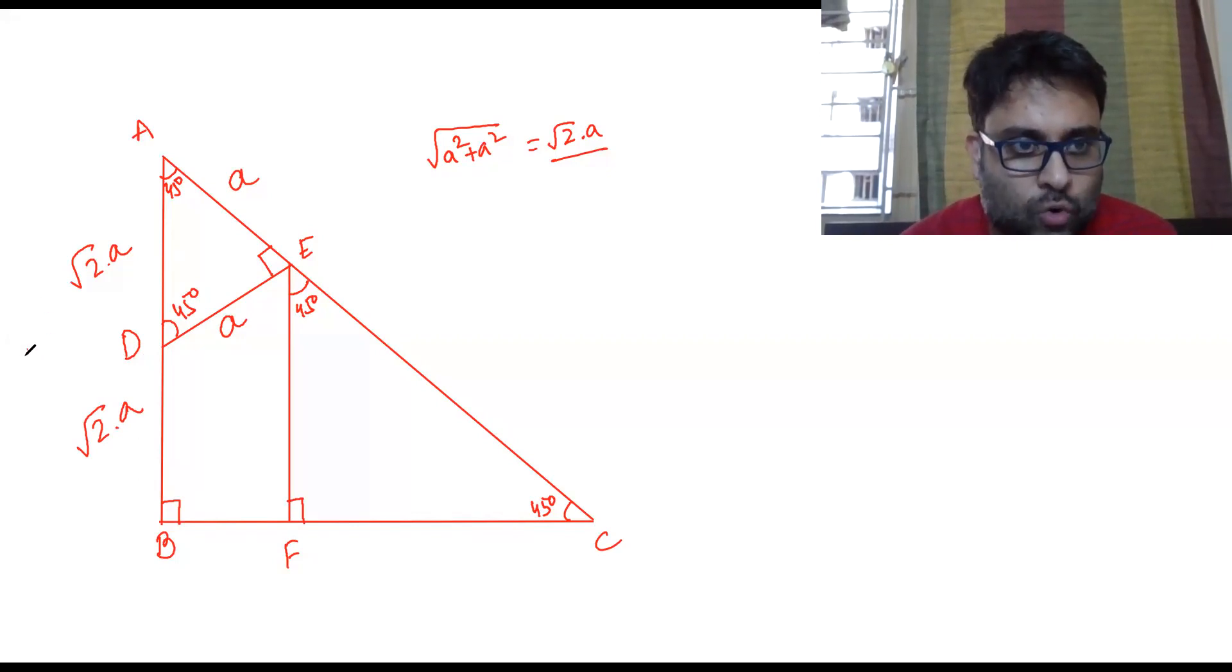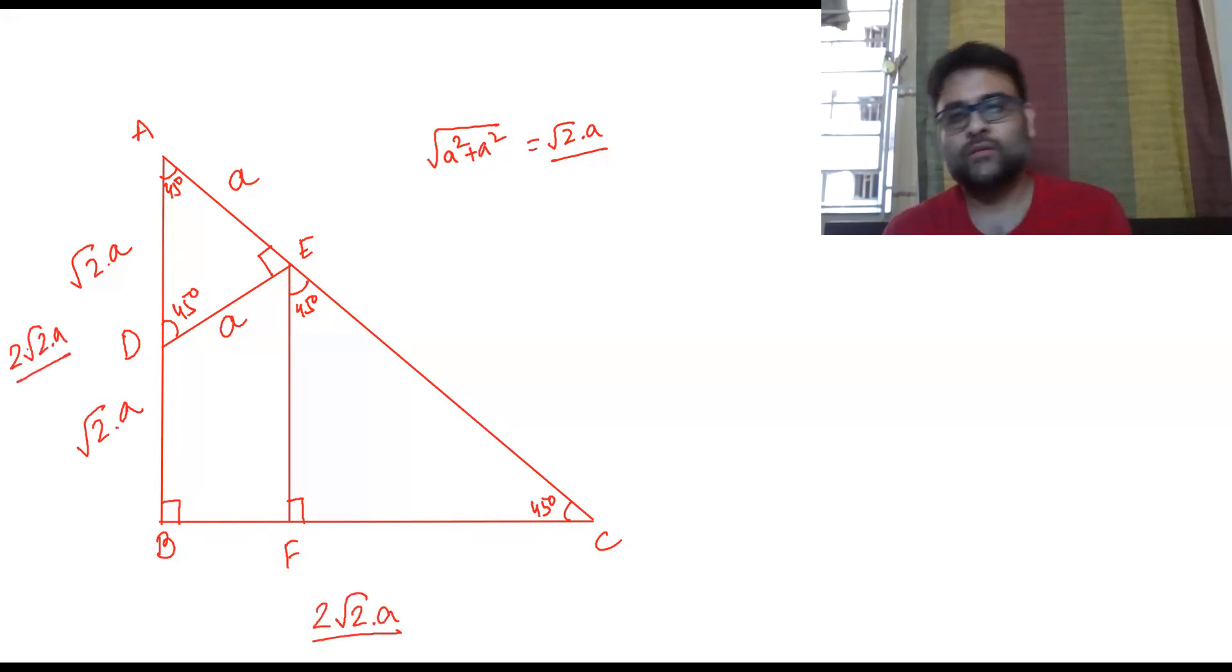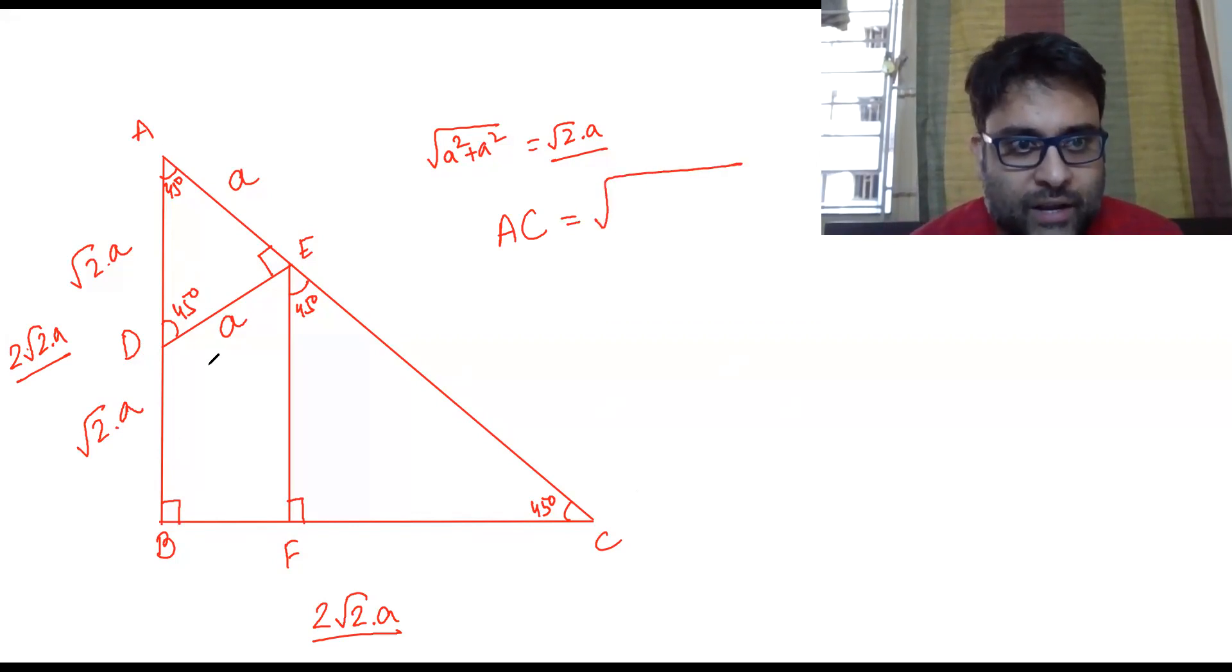Therefore AC, the entire AC will be root over perpendicular squared: (2√2a)² + (2√2a)² = √(16a²) = 4a. So this entire EC part is 4a.